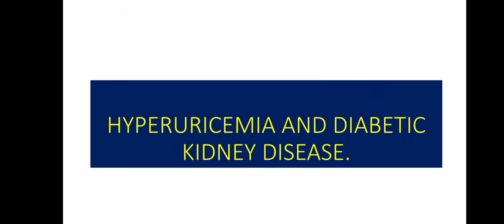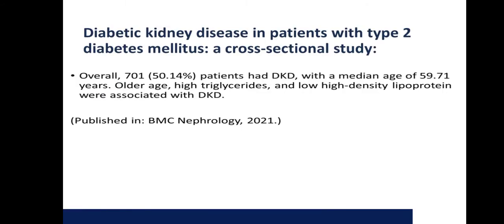Now, coming to hyperuricemia and diabetic kidney disease in patients with type 2 diabetes mellitus. This recent study was published in BMC Nephrology in 2021 and was a cross-sectional study. According to that, overall 701 patients — that is 50.14% — had diabetic kidney disease, with a median age of 59.71 years. Older age, higher triglycerides, and low HDL were associated with diabetic kidney disease.